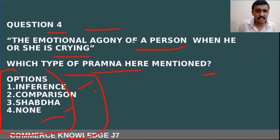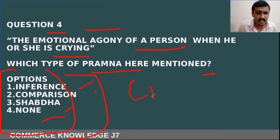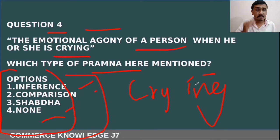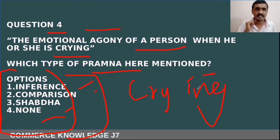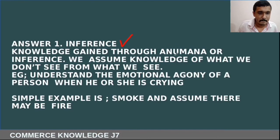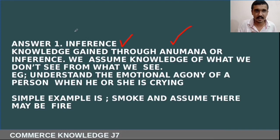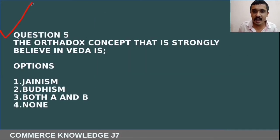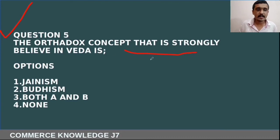The question says some kind of emotional aspect — when a person is crying, we assume there may be some sadness in their mind. That is why they are crying. We make the inference that the person is sad. This inference is called anumana, which is one kind of pramana.